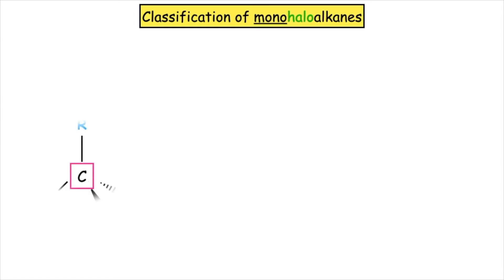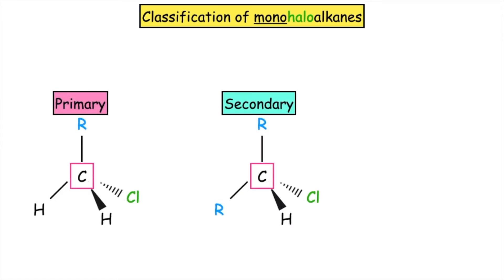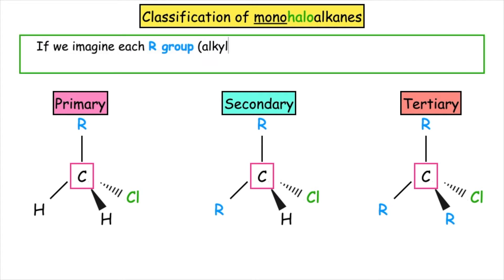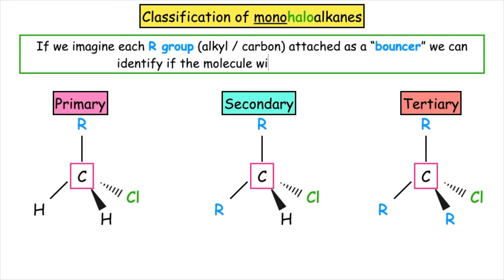What I've done here is taken each of the primary, secondary, and tertiary haloalkanes and put them into the tetrahedral format so that we can see the central carbon atom in the centre of the tetrahedral structure and also see the chlorine, which is our halogen, attached. I have replaced the full structural formula for each of the alkyl groups with the letter R, and if we imagine that this R group — our alkyl or carbon group — attached to the central carbon atom as a bouncer, this will help us identify if the molecule will be easy to attack.